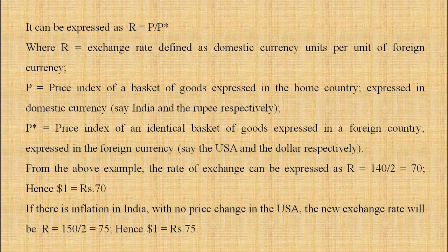This can be expressed as R = P / P*, where R is the exchange rate defined as domestic currency units per unit of foreign currency. P is the price index of an identical basket of goods in the home country expressed in domestic currency — for example, India in rupees. P* is the price index of an identical basket of goods in the foreign country expressed in foreign currency — for example, USA in dollars. From the above example, R = 140 / 2 = 70. Hence, 1 dollar equals Rs. 70.